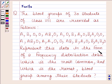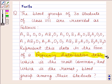Represent this data in the form of a frequency distribution table which is the most common and which is the rarest blood group among these students.